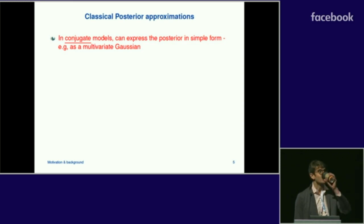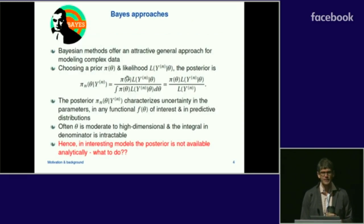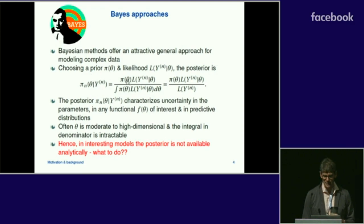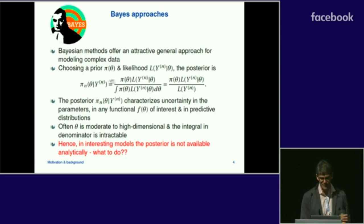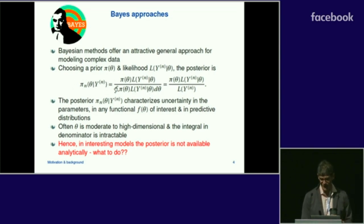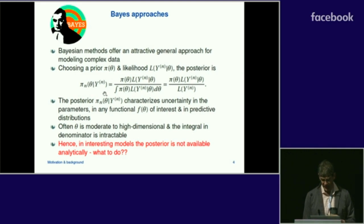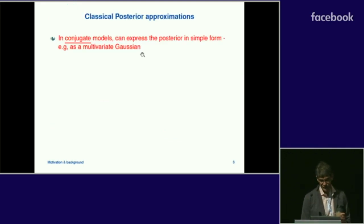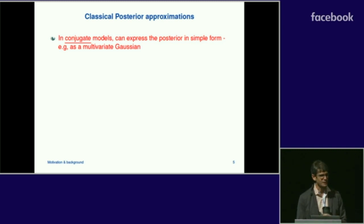In interesting models the posterior is not available analytically. If the model is conjugate — meaning the prior and posterior are in the same form — then life is good. For example, starting with a Gaussian prior and updating with a Gaussian linear model likelihood gives a Gaussian posterior. We can write down the posterior analytically. This is even true in somewhat interesting models with basis expansions. But in more complicated settings, we could potentially approximate the posterior using some tractable class of distributions.